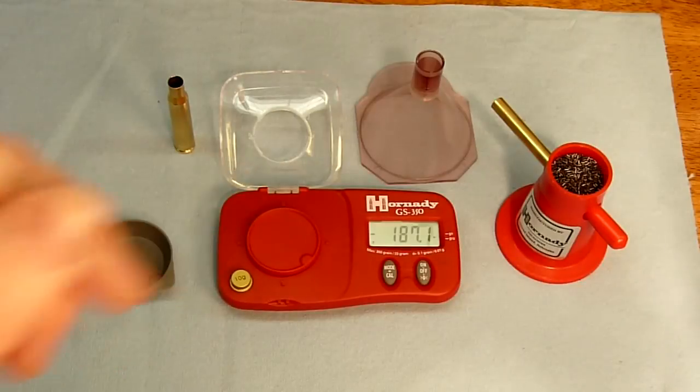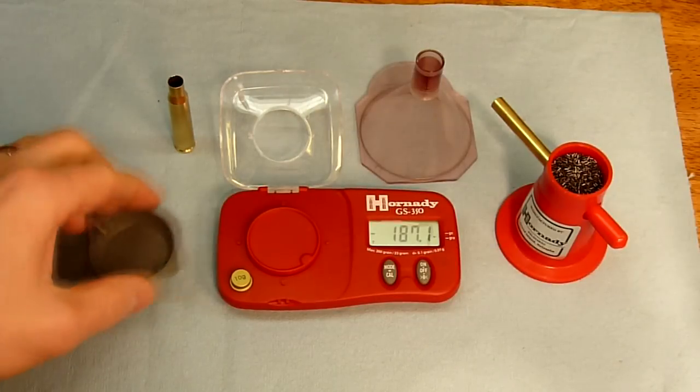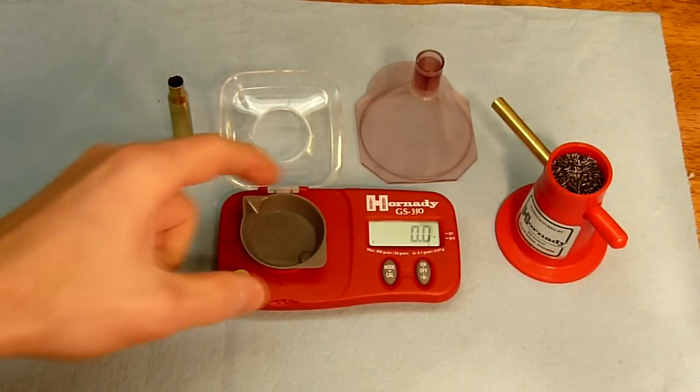So now we've got our trickler loaded with the same stick powder, and we're going to work up a charge with this scale with the trickler. First thing we're going to do is put the tray on the scale, and we'll then zero that out. So now we're zeroed with this tray.